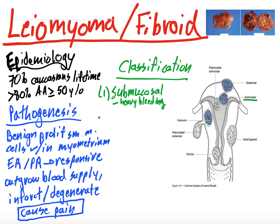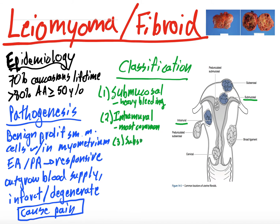They can be intramural, which means they're in the myometrium themselves — these are the most common type. They can still cause bleeding and pain, but not as often as submucosal, because submucosal are close to the endometrium whereas intramural are just within the myometrium. They can also be subserosal, which is deep to the uterine serosa. So we have the endometrium, the myometrium, the serosa — and subserosal fibroids are deep to the serosa.